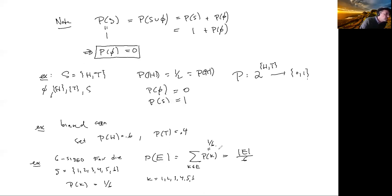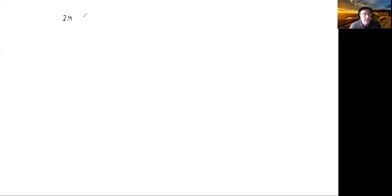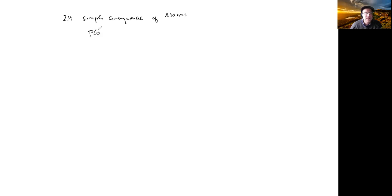So those are three examples. We are now finished with section 2.3 and we move on to section 2.4. What is 2.4 about? This is about simple consequences — formulas derived from the axioms. We've already derived one consequence: P of the empty set is 0, which was not an axiom but a consequence of the axioms.